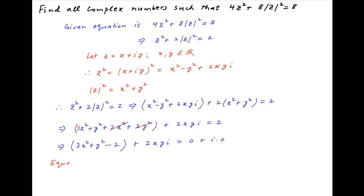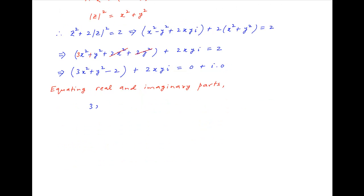Equating the real and imaginary parts on both sides, we get 3x squared plus y squared equals 2 — call this equation 1 — and xy equals 0 — call this equation 2.